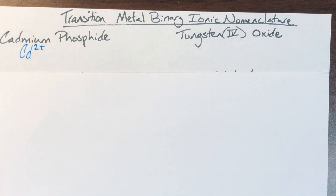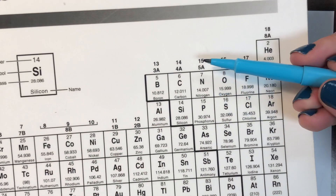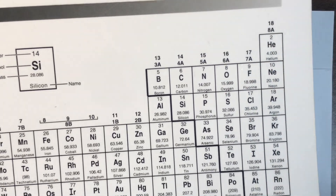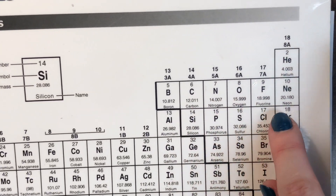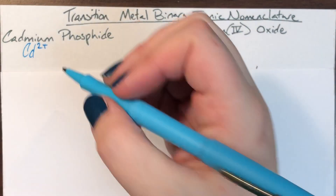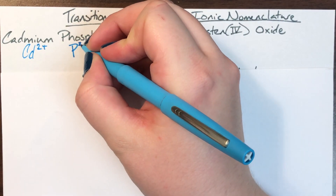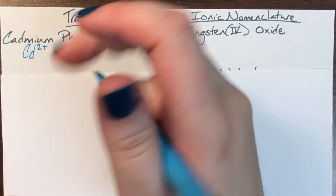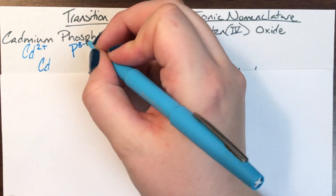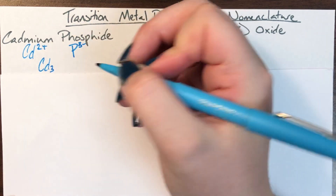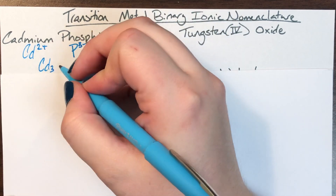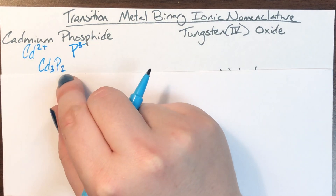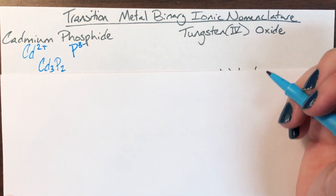Phosphide is secretly phosphorus. Phosphorus is in column 5A, which means it has 5 valence electrons. So it's going to steal 1, 2, 3 valence electrons. Stealing is bad, so phosphorus is going to have a negative 3 charge. Then I can go ahead and crisscross charges for subscripts. Cadmium gets a subscript of 3 from phosphorus, and phosphorus gets a subscript of 2 from cadmium. The ratio 2 to 3 is the lowest possible, so I stop there.